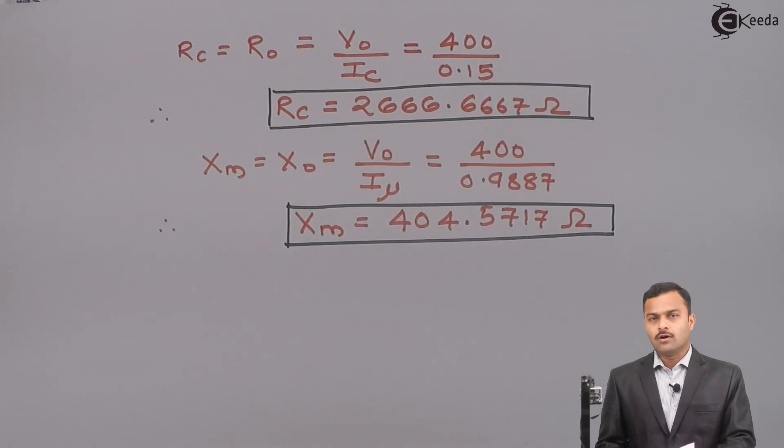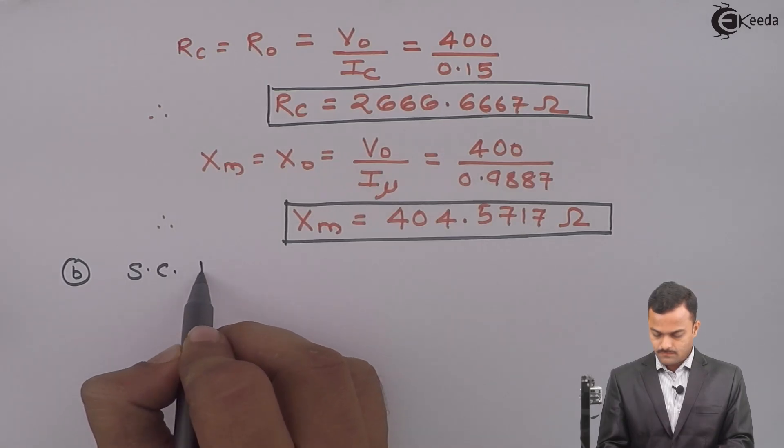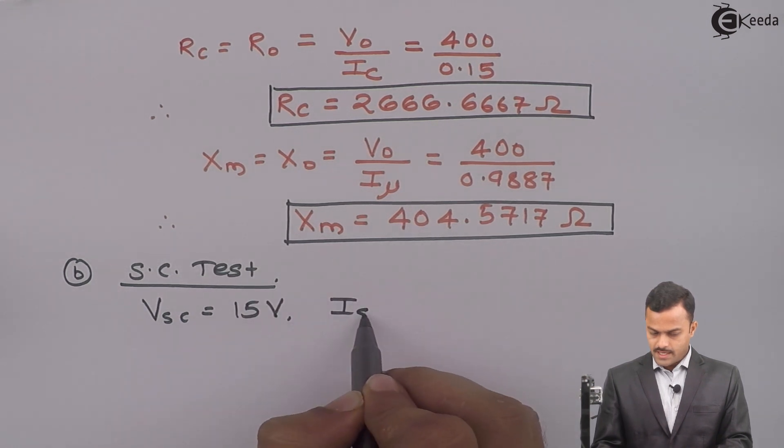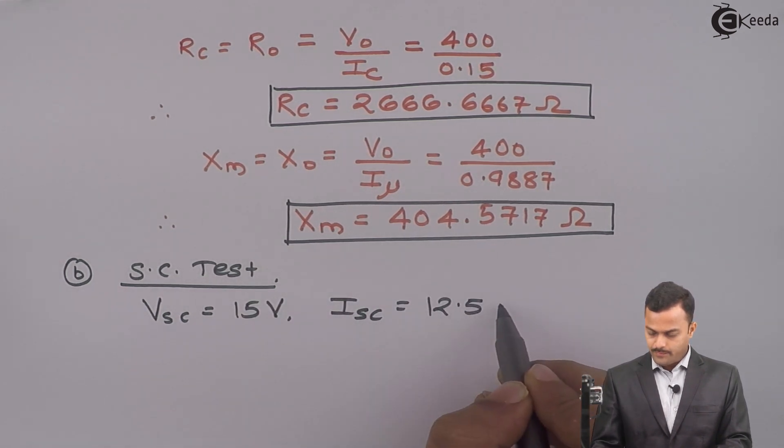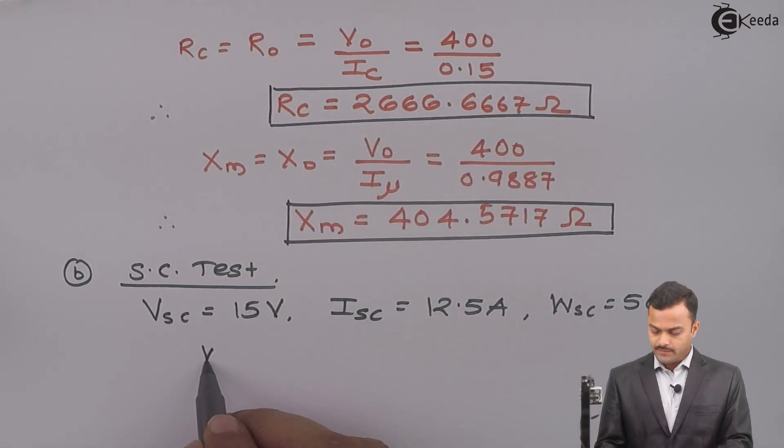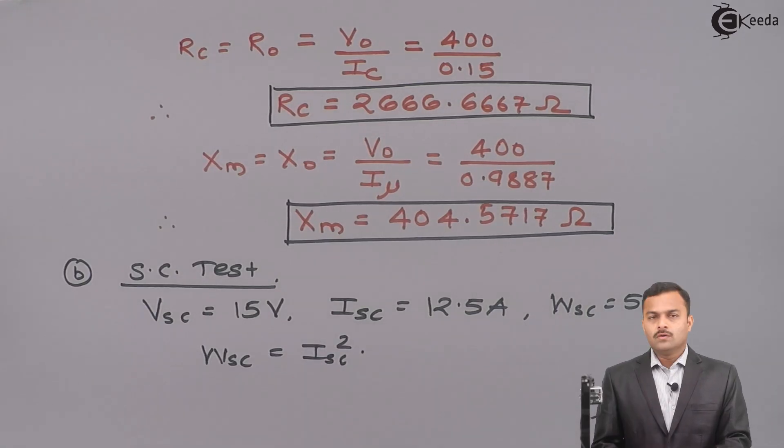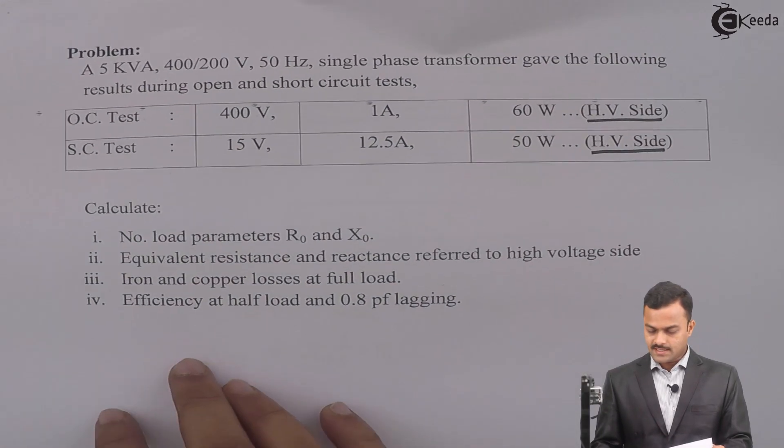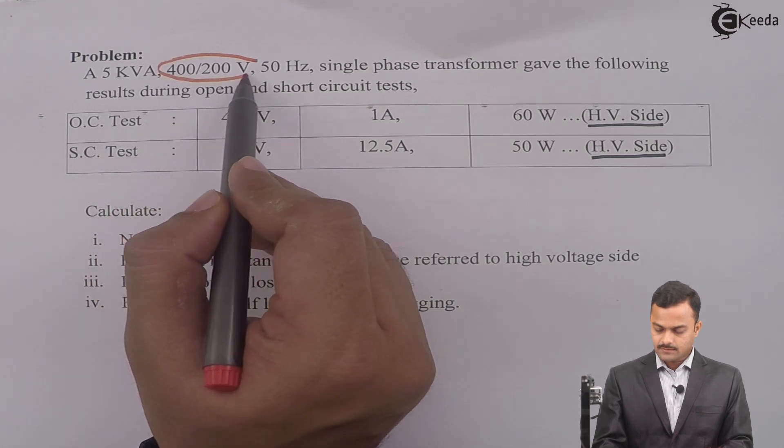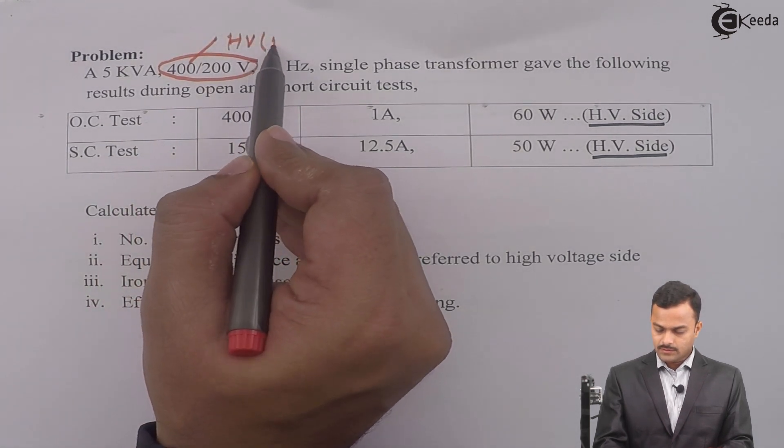Now, I will take results of short circuit test. I will get VSC as 15, ISC 12.5 ampere, and WSC equal to 50 Watt. Short circuit test, that power given is a copper loss and what resistor we have to take it depends where the test is performed. So, once again I will go back to the problem statement. So, in the problem statement they are saying the test is performed on HV side. So, if we check here this will be our HV side nothing but a primary.